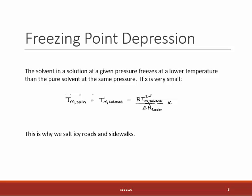Freezing point depression is one we use frequently. The solvent in the solution at a given pressure freezes at a lower temperature than the pure solvent at the same pressure. For ideal situations with a small mole fraction of solute, we approximate the change in melting temperature as: ΔT = −R·T_melt² / ΔH_fusion × x_solute, where temperatures are in Kelvin. This is part of what happens when we salt icy roads and sidewalks. This equation isn't perfect for table salt since it dissociates, but it is an effective starting point.